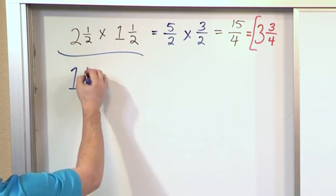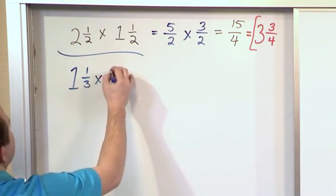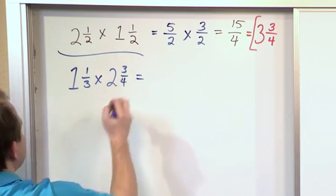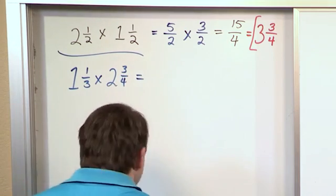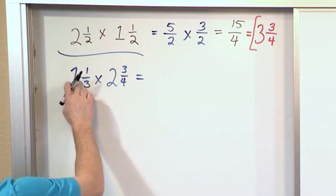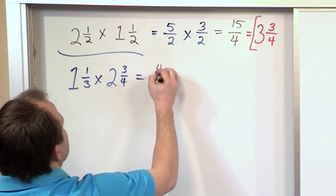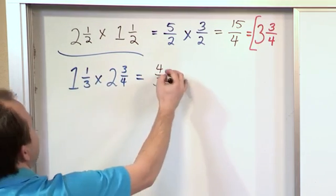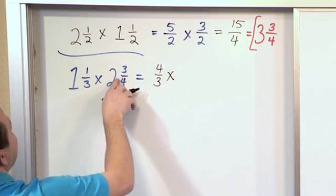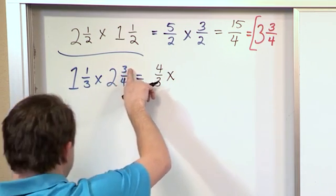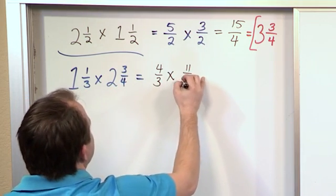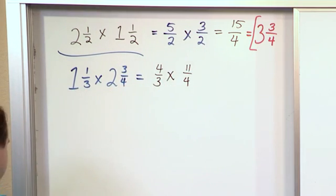What if we have 1⅓ times 2¾? How would we handle that? Well, 3×1 is 3 plus 1 is 4/3, and we're multiplying by 4×2 is 8 plus 3 is 11, and that would be 11/4 because we always write it over what's on the bottom.